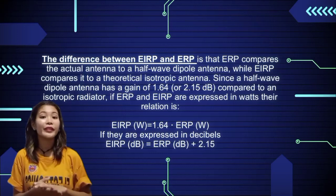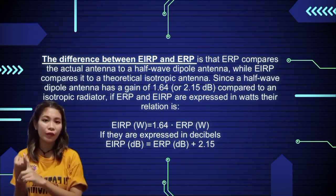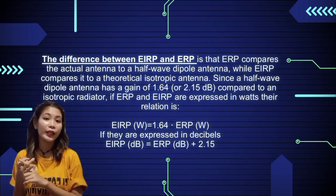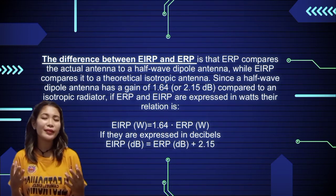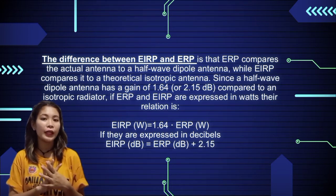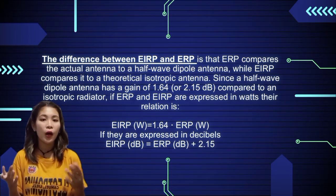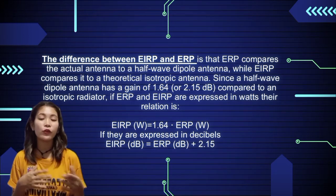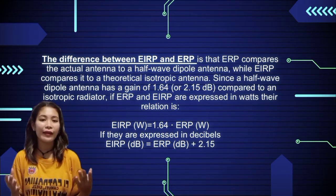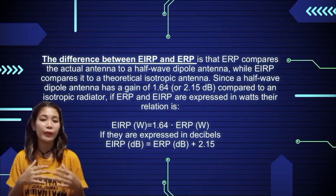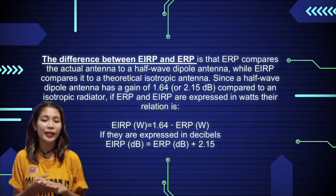Let's move on to their differences. Ano nga kaya yung pagkakaiba ng dalawa — ng ERP or effective radiated power at ng EIRP or effective isotropic radiated power? Pagdating sa ERP, ito ay kinukumpara sa isang actual antenna which is the half-wave dipole. Yung EIRP naman ay kinukumpara sa isang theoretical isotropic antenna. Kaya dyan sila nagkakaroon ng pagkakaiba kahit na sila ay parehong nagme-measures ng isang power.